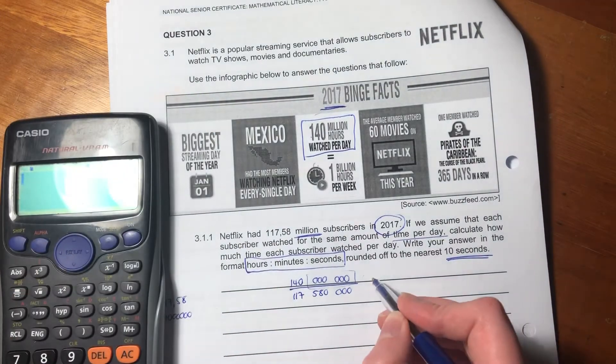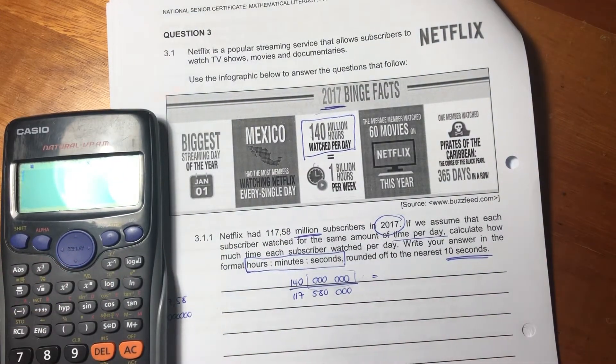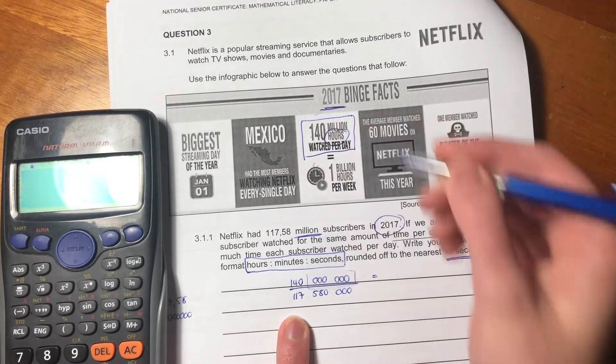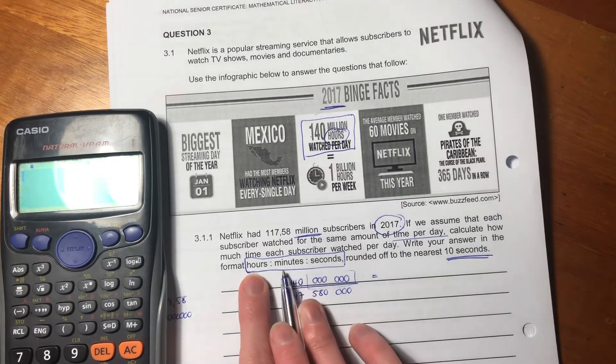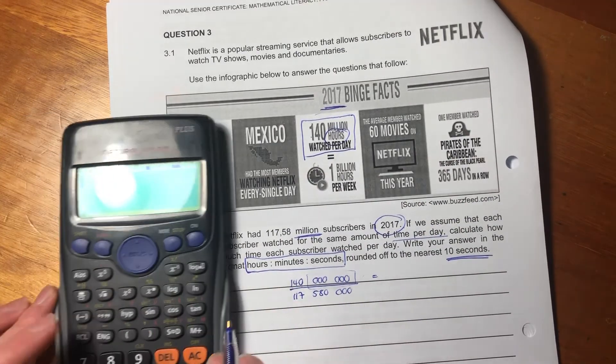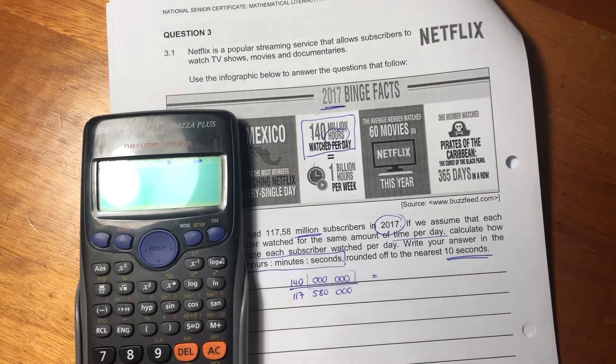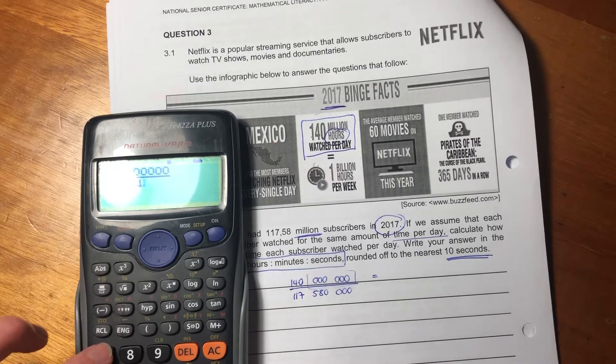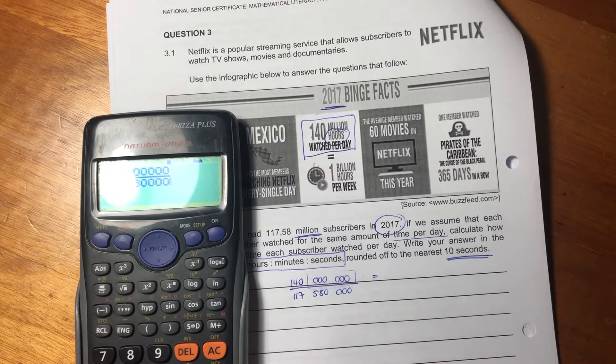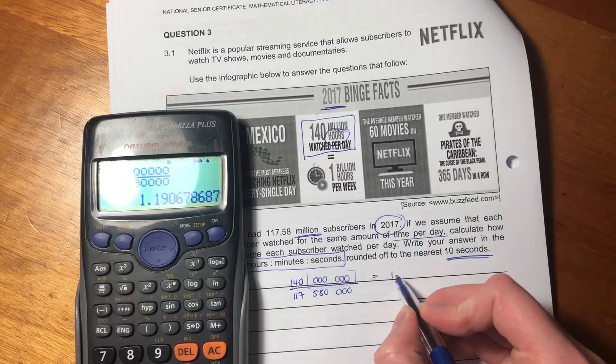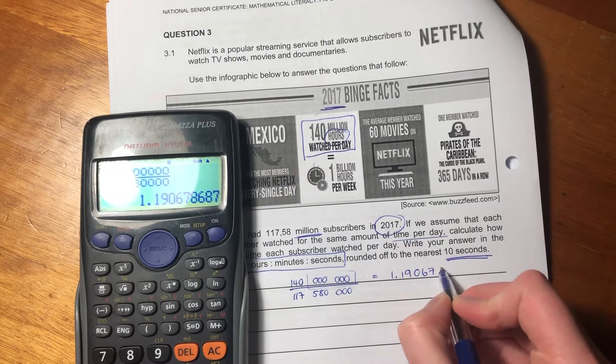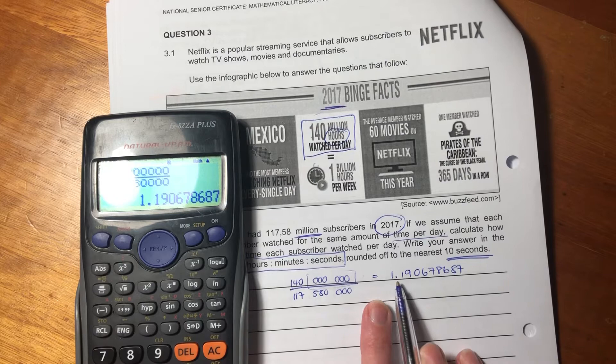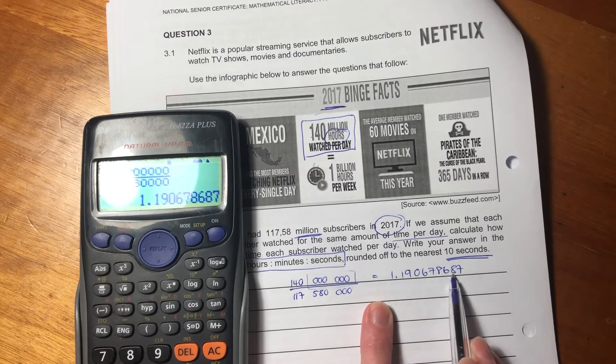So now we need to work out what this is. It will tell us the answer in hours, because we know that the 140 million refers to hours. So it's going to give us an answer in hours, but then we're going to have to do hours, minutes, and seconds. So we're going to go 140, 1, 2, 3, 1, 2, 3. So this is saying 1.190678687 hours.